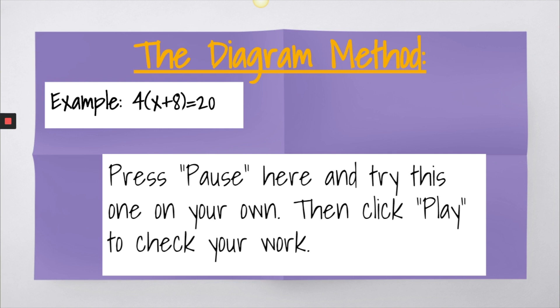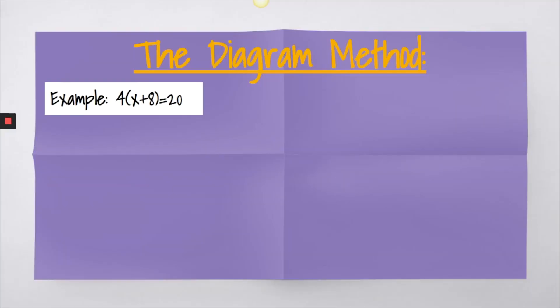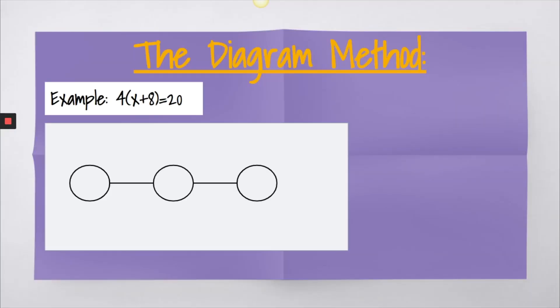Take a look at this one. Press pause here and try this one on your own. Click play when you're ready to check your work. So this one was a little different because it did have parentheses in it. First, again, we place our x there. Now, this one, because of the parentheses, we would actually add 8 first and then multiply that sum by 4. The result would be 20.